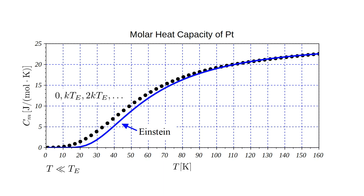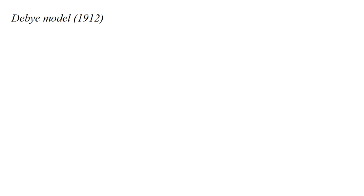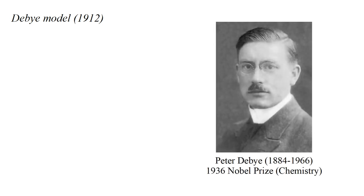The predicted heat capacity of the Einstein model, however, approaches zero more rapidly than is experimentally observed. The quantitative shortcomings of the Einstein model were rectified in 1912 by the Debye model, developed by Peter Debye.